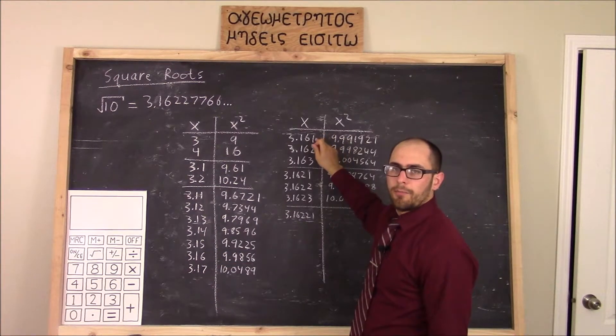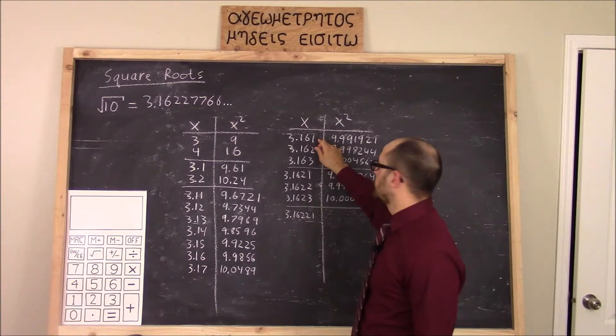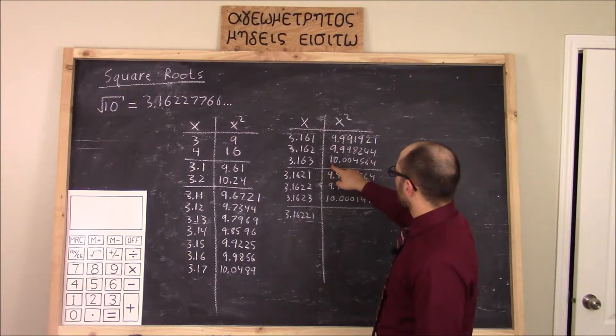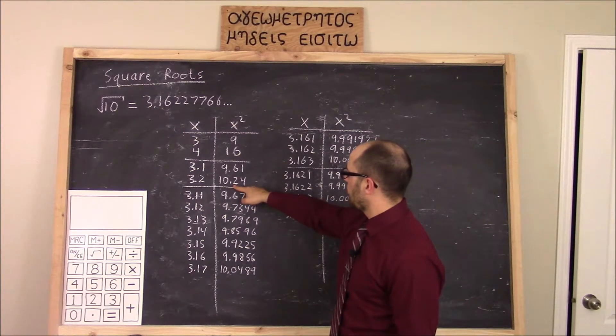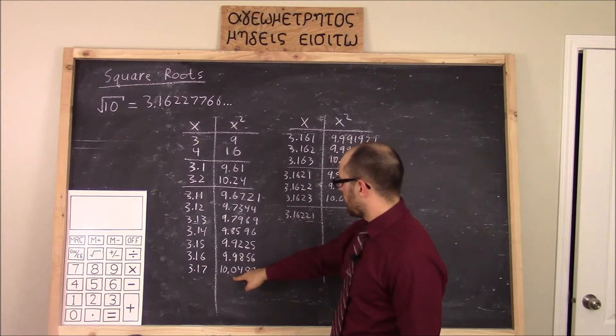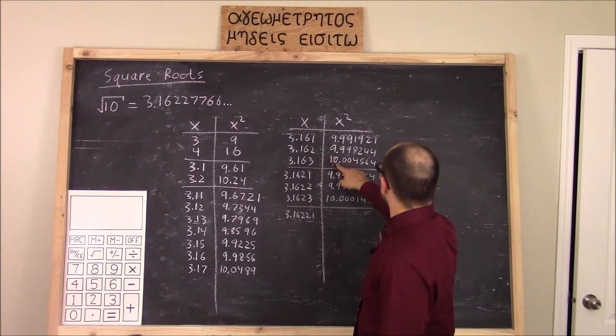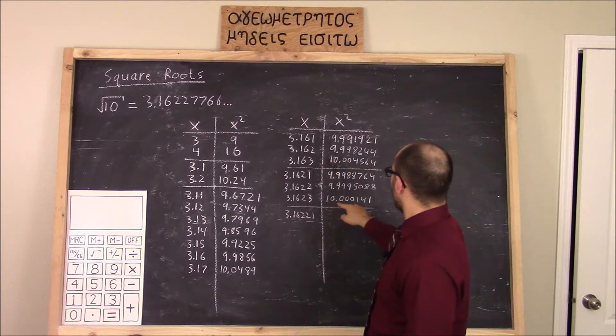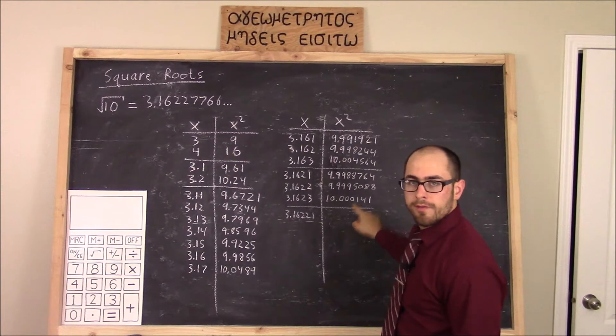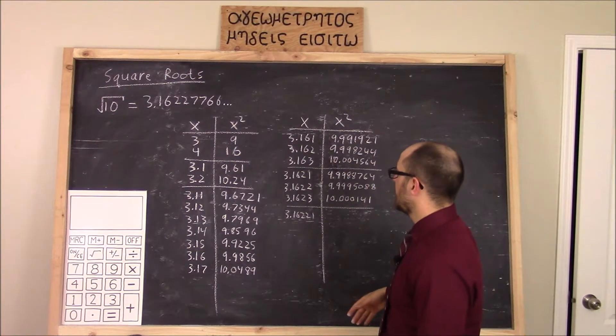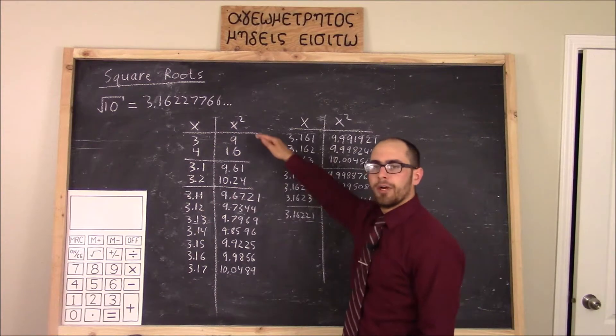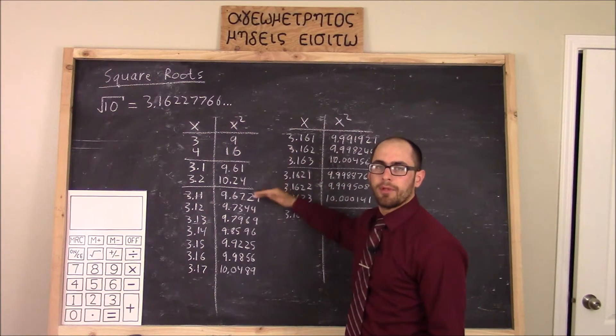I can continue the pattern adding one more decimal place of precision with each step. Notice how my answer is getting closer and closer to 10: starting from 10.24, 10.04, 10.004, 10.0001. So we say that our answer is converging on 10 with each iteration. An iteration being one step in the table.